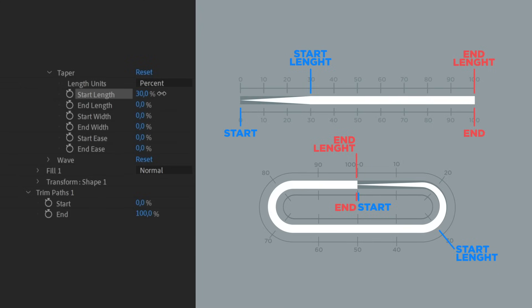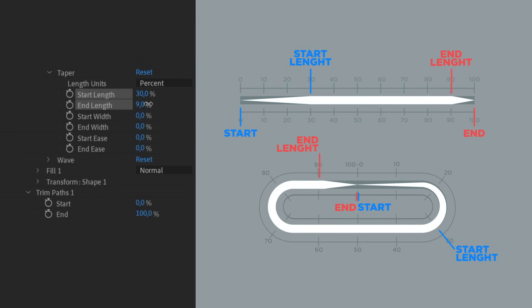So if we set 30 for the start length, you'll see that the increasing segment reaches 30% of the stroke length. And if we set the end, for example, only at 90, the decrease of the width will involve only the last percent of the stroke.